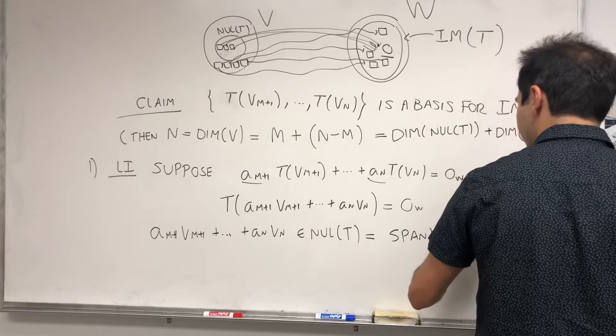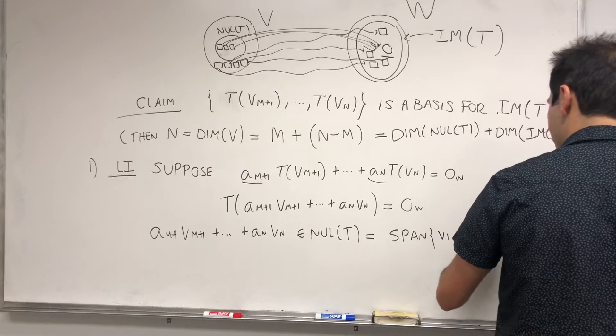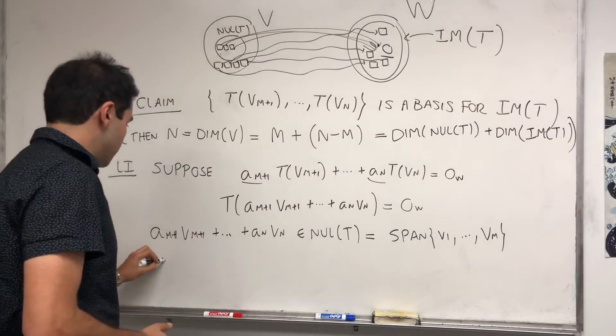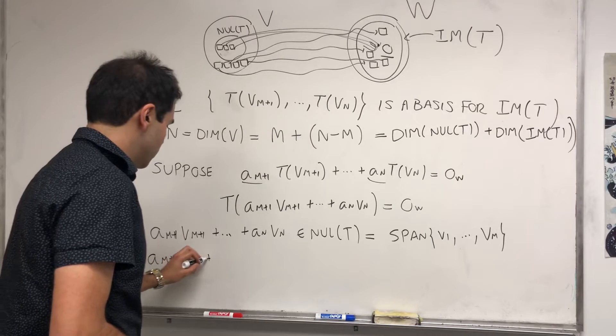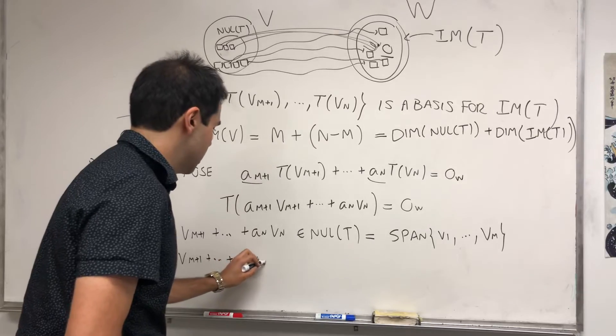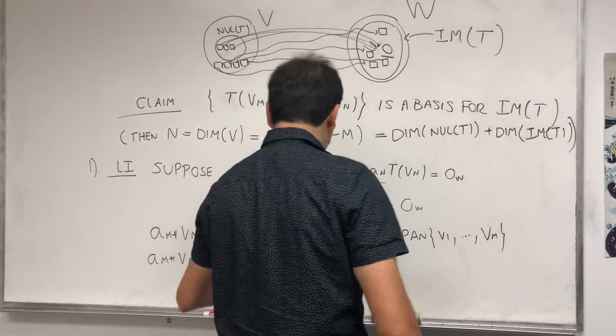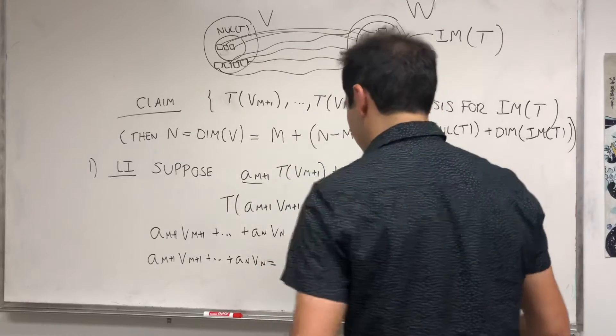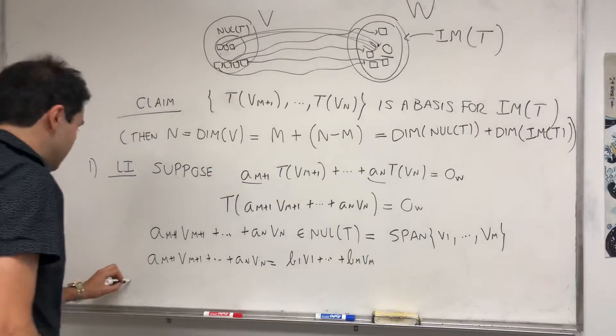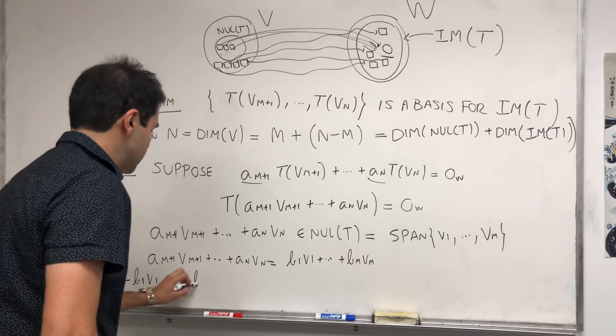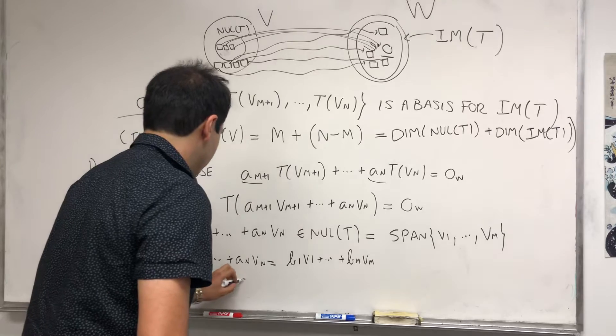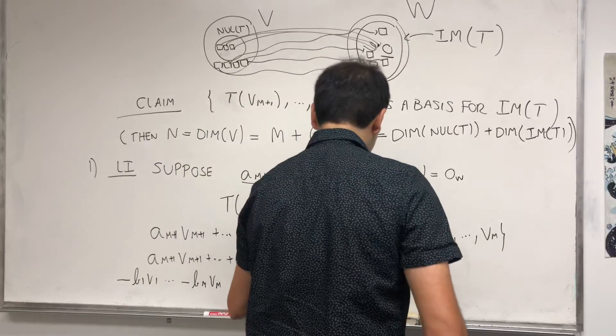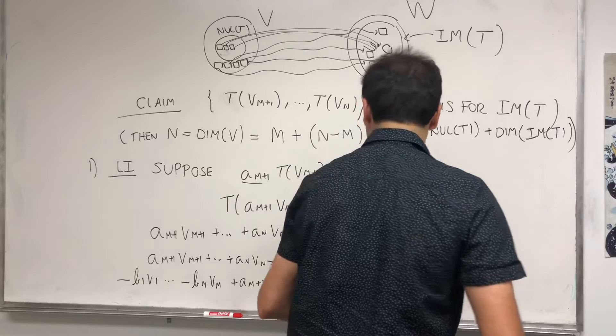Which is the span of V1 up to Vm. And then what do we have? So then Am+1·Vm+1 + ... + An·Vn, because it's in the span, it's equal to B1·V1 + ... + Bm·Vm. And then just put everything on the left-hand side, so -B1·V1 ... -Bm·Vm + Am+1·Vm+1 + ... + An·Vn is the zero vector in this case in V.